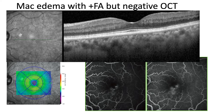Here again we see that OCT cannot always pick up edema. The structural OCT of this patient appears relatively normal, yet fluorescein angiography clearly shows leakage. Remember that OCT is static and misses 10% of leakage — if you suspect leakage, get fluorescein angiography when OCT doesn't show it.